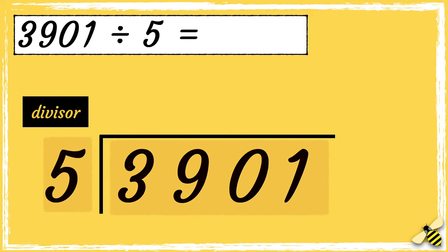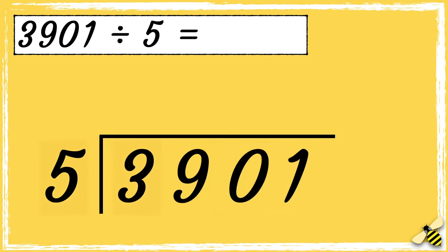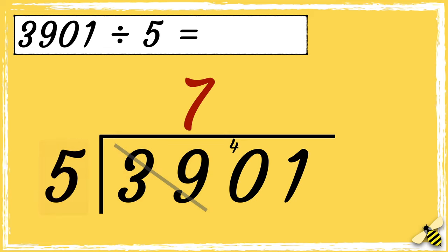So how many fives go into 3? Five doesn't go into 3, so instead we'll work out how many times five goes into 39. Five goes into 39 seven times with four left over. Notice how the number 0 has now become the number 40.